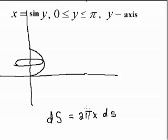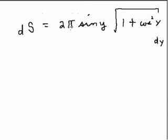Our next example is x equals sine y, where y goes from 0 to π, and we revolve about the y-axis. Our element of surface area is 2π x ds. This time ds will be in terms of dy instead of dx. The element of surface area is 2π times sine y times the square root of 1 plus cosine squared times dy.